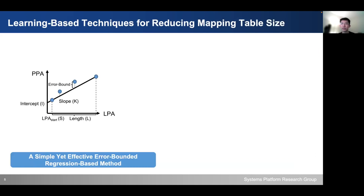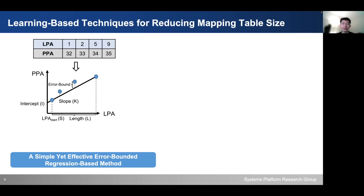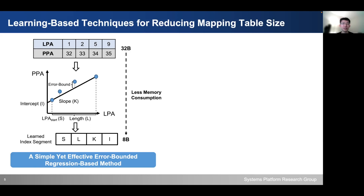In this work, we use a learning-based approach to reduce the mapping table size. With a simple yet effective linear regression-based approach, we can compress multiple mapping table entries into a single learned index segment. The learned index segment can be parameterized into four parameters: the start LPA address, the length, the slope, and the intercept. By doing so, we can reduce the memory consumption.